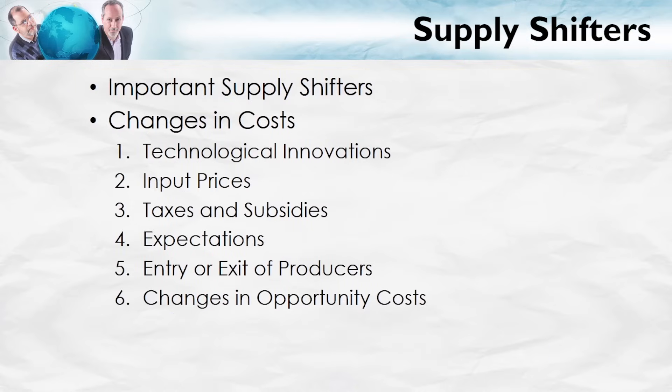Here again is our list of important supply shifters — these are not the only supply shifters, but some of the most important ones. To understand how to solve these problems, keep the general procedure in mind: figure out first what the effect of the change is on costs. Once you know the effect on costs, you know how to shift the supply curve. If costs decrease, that's an increase in supply. If costs increase, that's a decrease in supply. Whatever shifter you get, figure out its effect on costs, then work out the effect on the supply curve, draw the diagram, and you'll be fine.